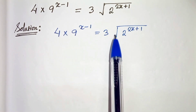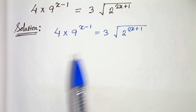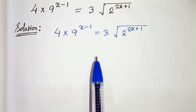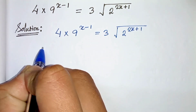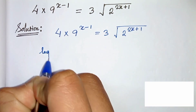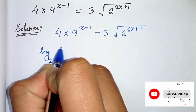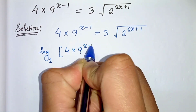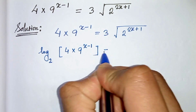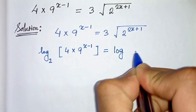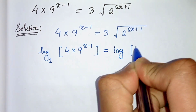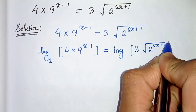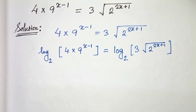Both sides of this given equation are positive. So let's take logarithm on both sides with base 2. So log of 4 times 9 to the power x minus 1 with base 2 equals log of 3 times root under 2 to the power 2x plus 1 with base 2.